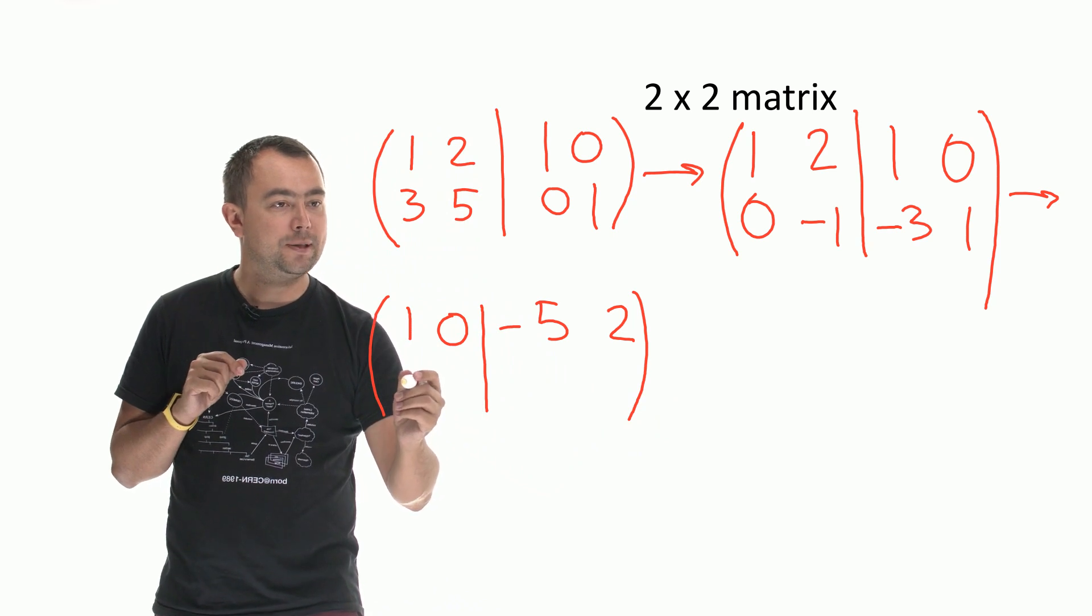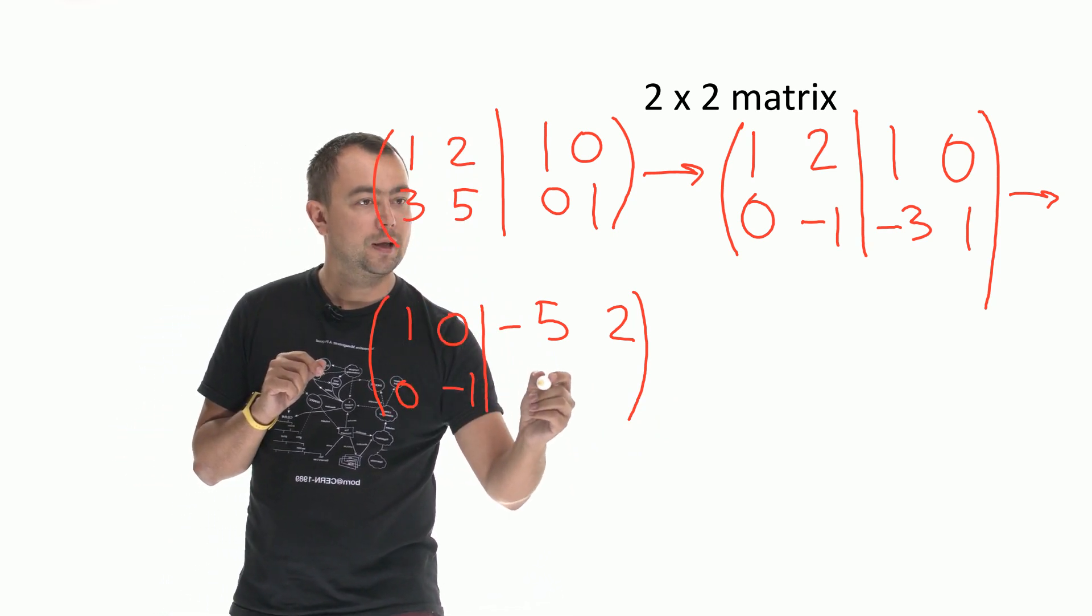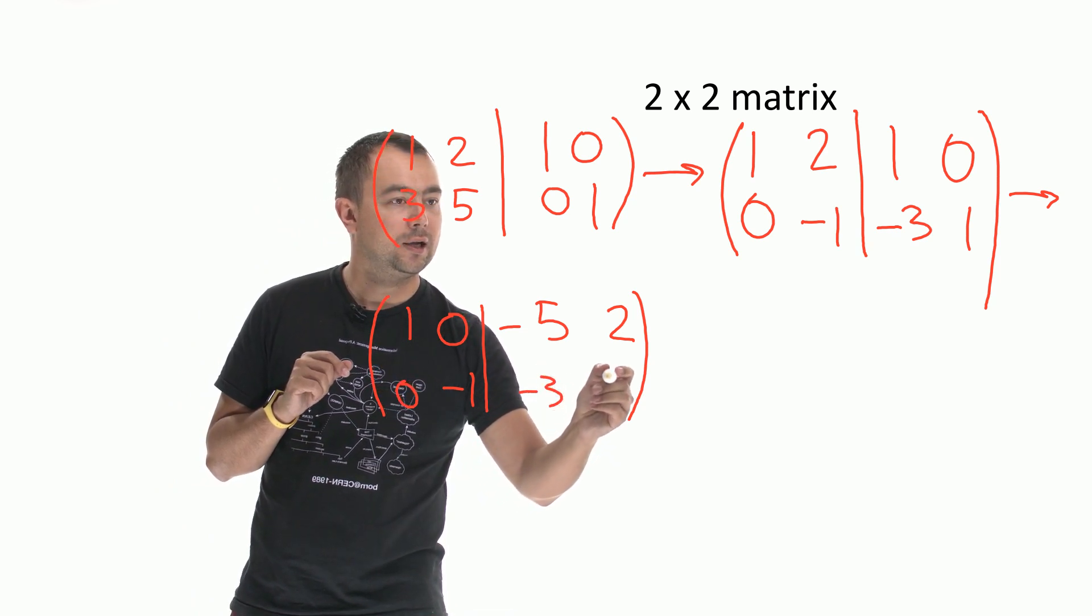And we just copy the bottom row: 0, minus 1, minus 3 and 1.